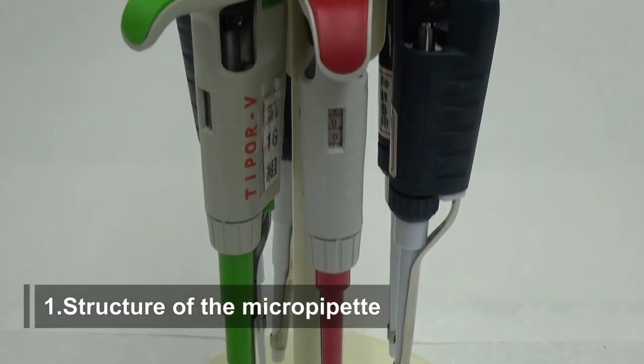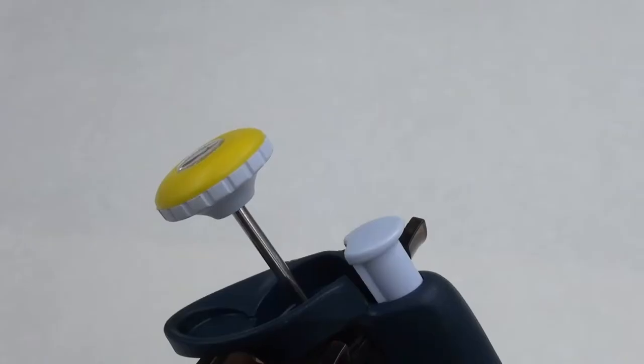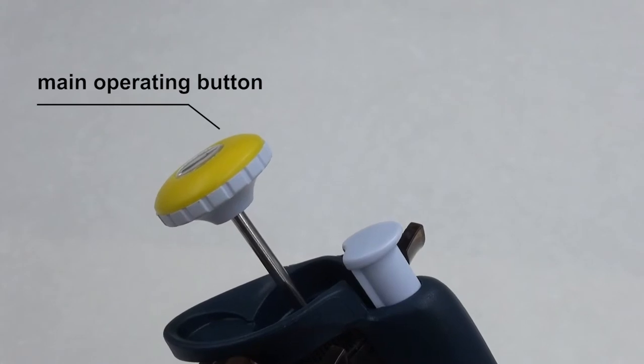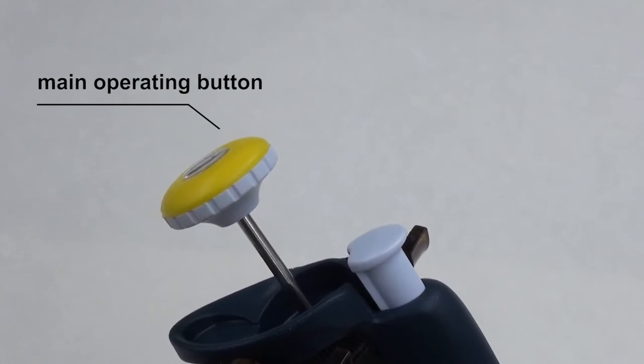Structure of the micropipette: At the top is the main operating button, which sometimes doubles as the volume adjustment dial.